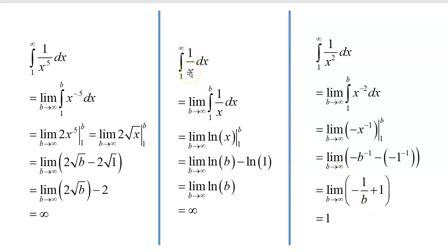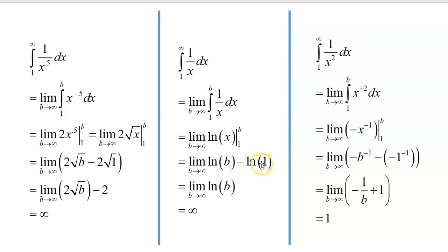Right in the middle is the borderline: 1 over x. Remember, 1 over x doesn't fall into the nice power rule pattern of bumping the exponent up by 1 and dividing, because you'd get a zero exponent. The integral of 1 over x is the natural log of the absolute value of x. We're positive here, so I don't need the absolute value. When I plug in the bounds, the natural log of B minus the natural log of 1 — that's zero — so we're just looking at what happens as B goes to infinity to the natural log of B.